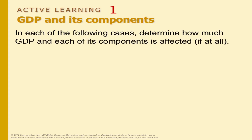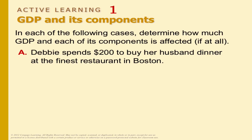Practice time. Debbie spent $200 to buy her husband dinner at the finest restaurant in Boston. How much was GDP affected and which of its components was affected? Was GDP affected? Yes. Positively or negatively? Positively. By how much? $200. What component? Consumption.